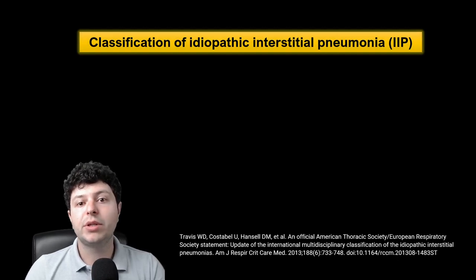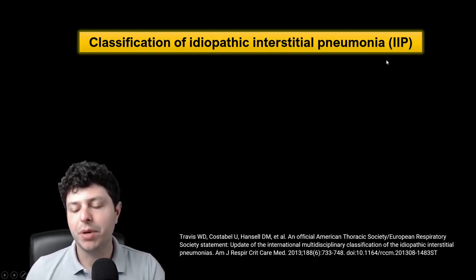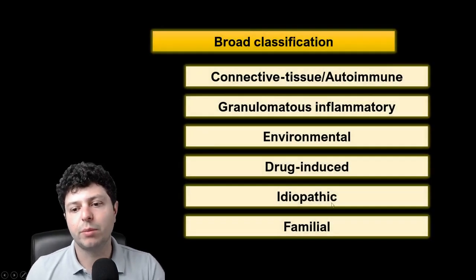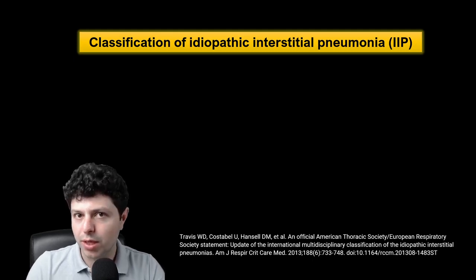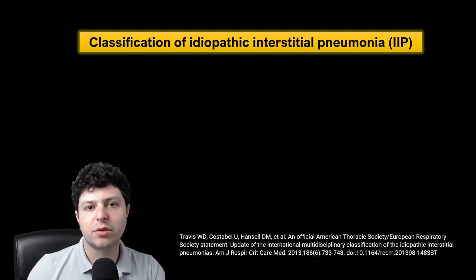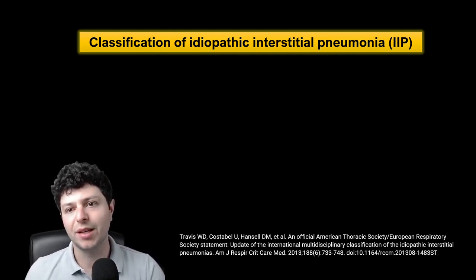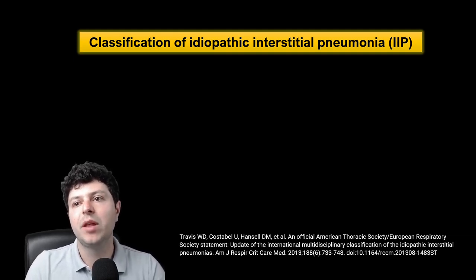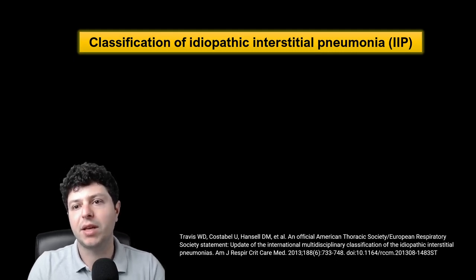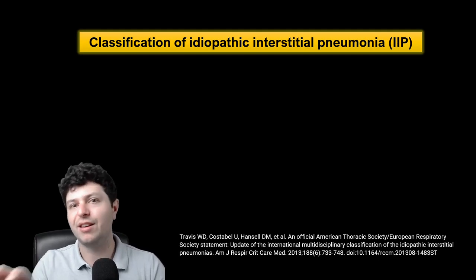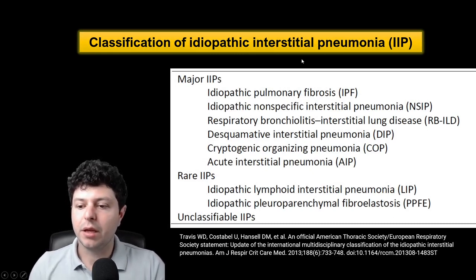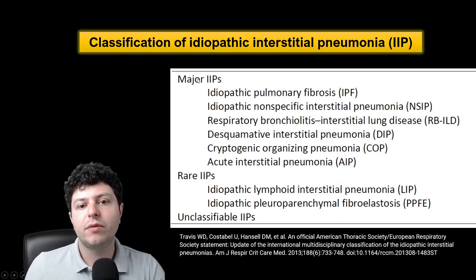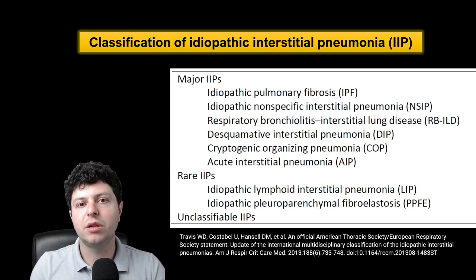I'd like to talk about the idiopathic interstitial pneumonias, or IIPs. Going back to the idiopathic interstitial lung diseases, we sometimes call these idiopathic interstitial pneumonias or IIPs. There is a classification statement — I've left the reference in the description — published in 2013, which covers ILDs that are idiopathic in nature and divides them into three groups: major IIPs, rare IIPs, and unclassifiable IIPs.